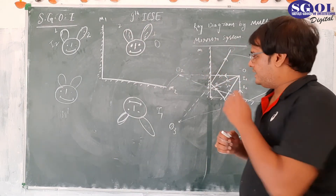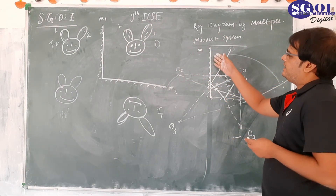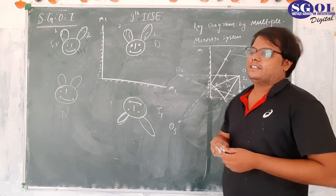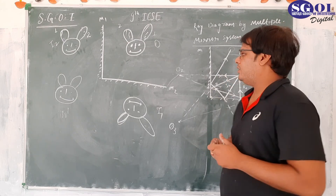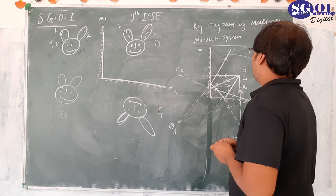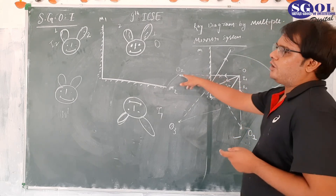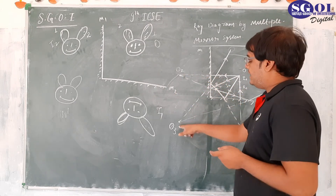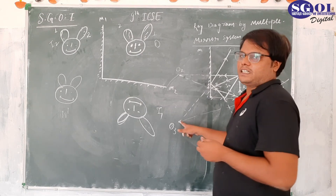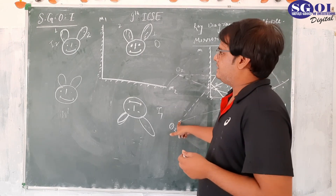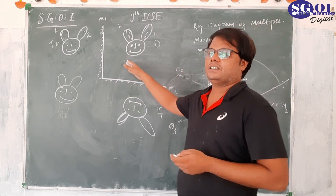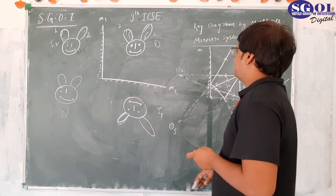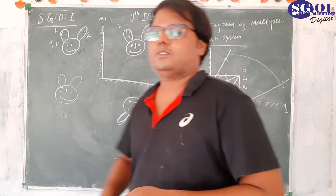So what we saw today: when two mirrors are inclined at 90 degrees, a total of three images are formed. Two of them are formed after the first reflection, and the third image is formed after the second reflection. That's enough for today — we will meet again tomorrow.